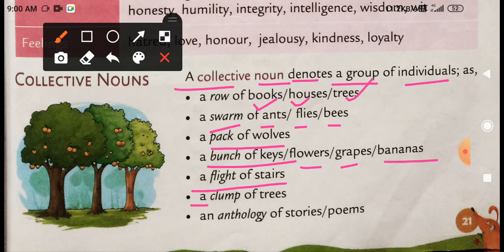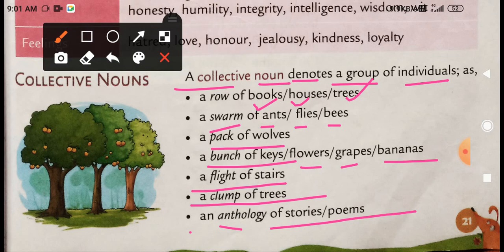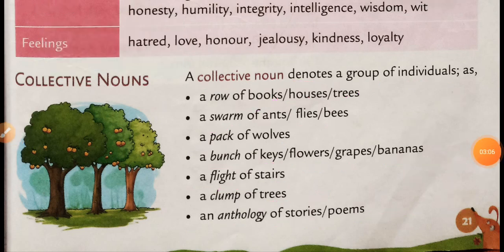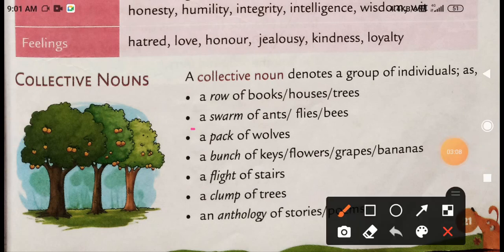Flight of stairs, clump of trees, and anthology of stories and poems. These are collective nouns — वो चीज़ें जो समूह को, group को show करती हैं. जैसे row of books — बहुत सारी books, houses, trees. Swarm of ants, flies, bees — यानि कि bees का, ants का एक झुण्ड, swarm — तो ये भी group को show कर रहा है.